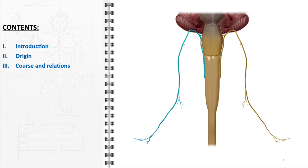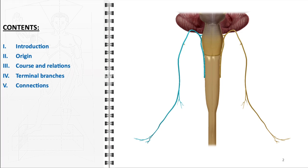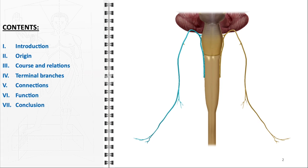Next, we will meticulously trace the complex course of the accessory nerve and examine its anatomical relationships with other structures. Following this, we will conduct an in-depth exploration of the terminal branches of the accessory nerve. Our exploration will then extend to the nerve's connections with other nerves, delving into its functional aspects, including a particular emphasis on its role in motor functions. Lastly, we will conclude with a comprehensive summary.